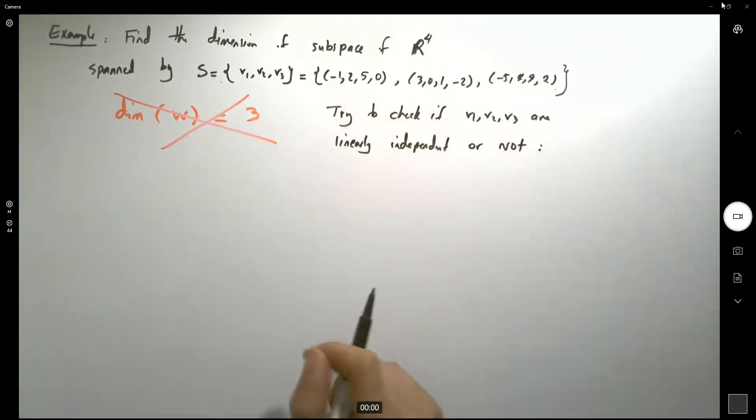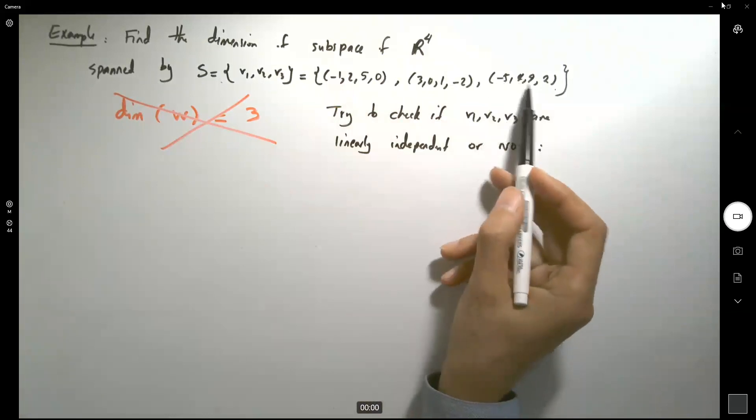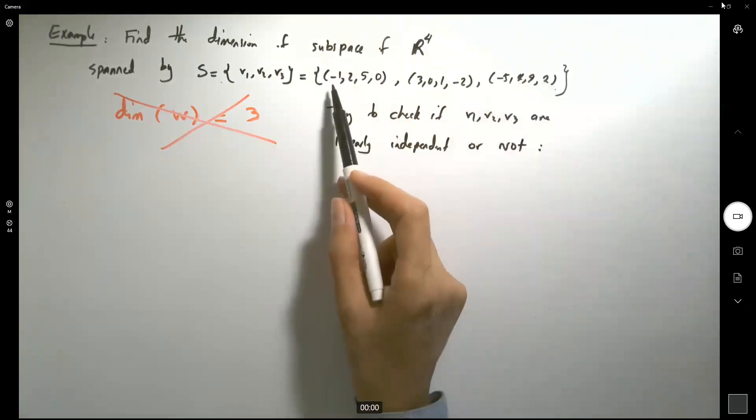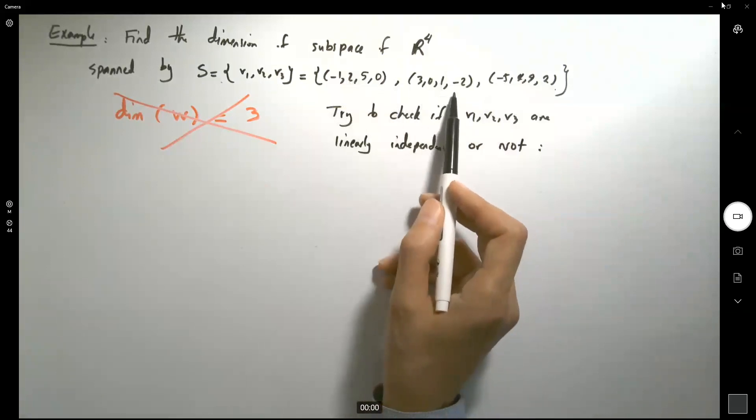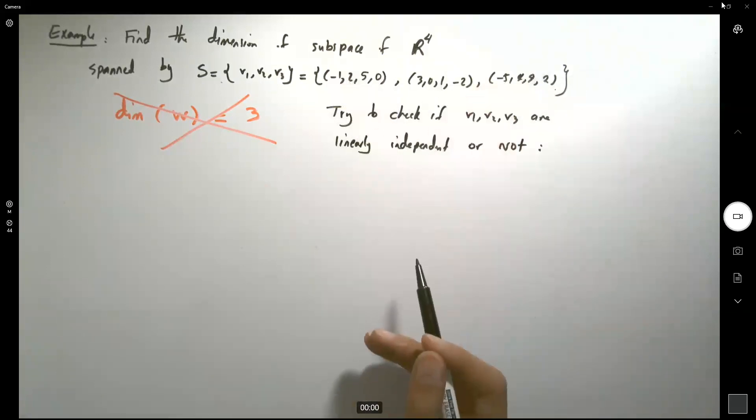So just look at these elements: here you have negative 5, 4, 9, and 2, and here you have negative 1, 2, 5, 0, 3, 0, 1, and negative 2. Just try to investigate this.